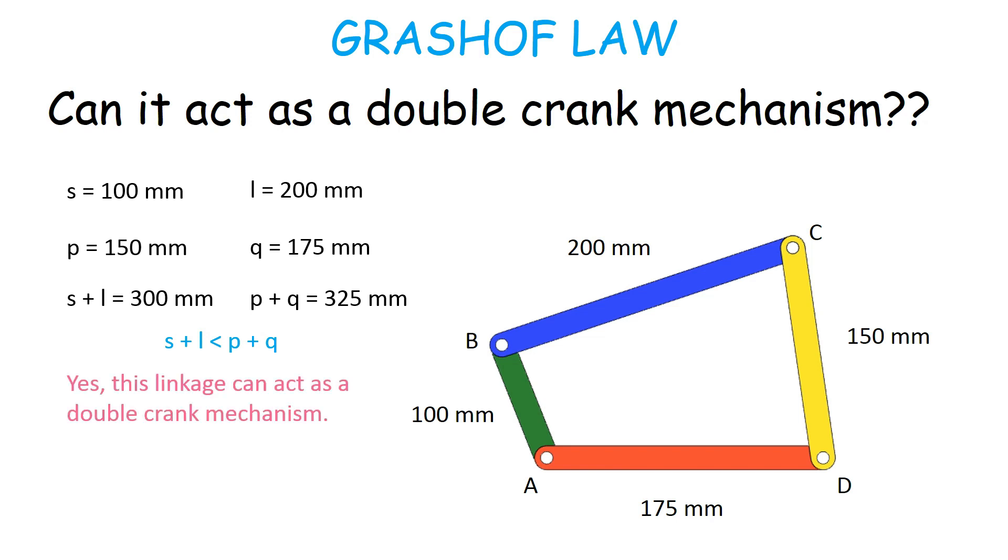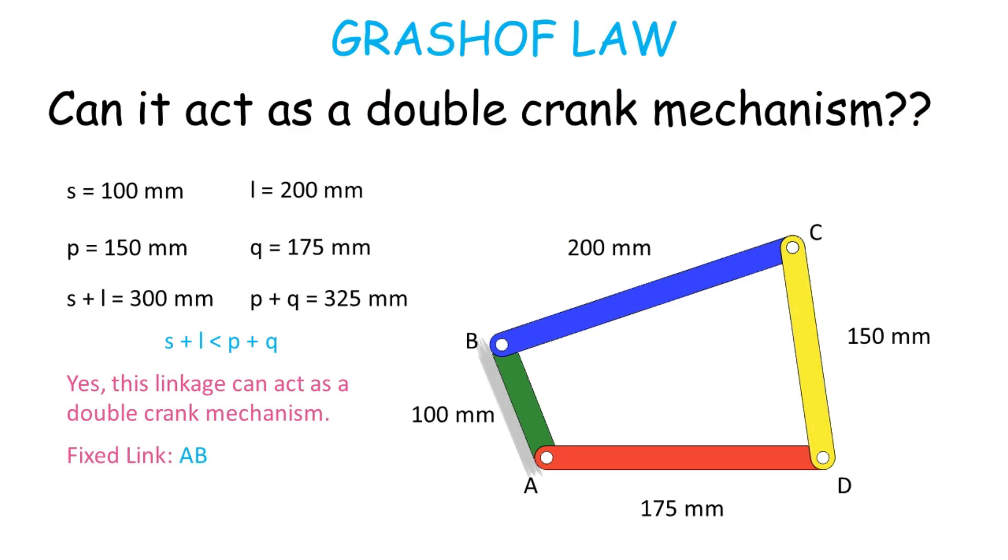So yes, this linkage can act as a double crank mechanism. For that, we will need to ground the shortest link, which is AB in the given linkage.